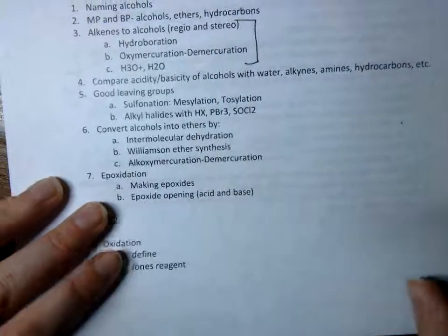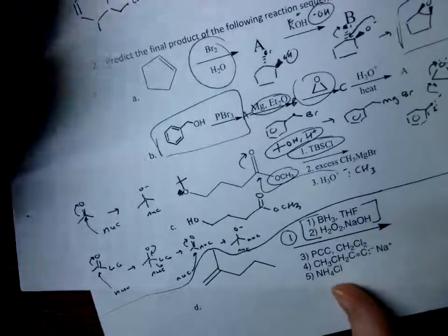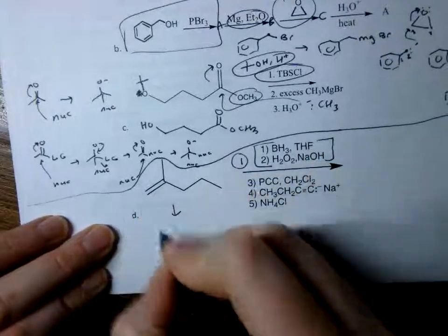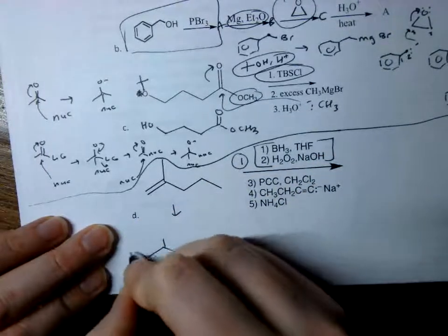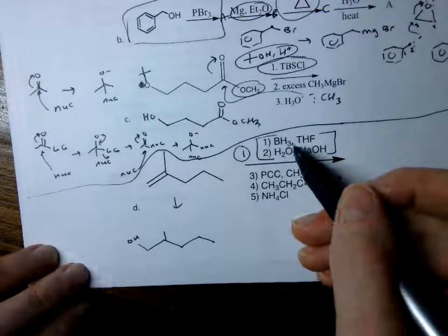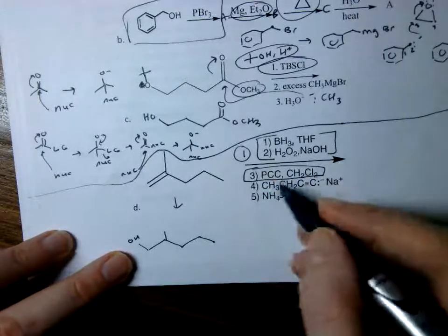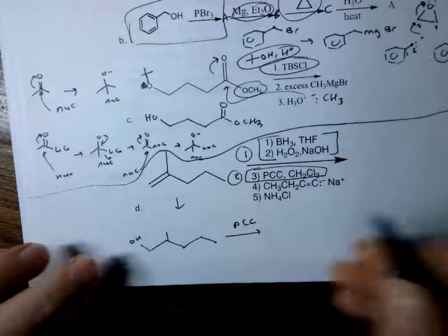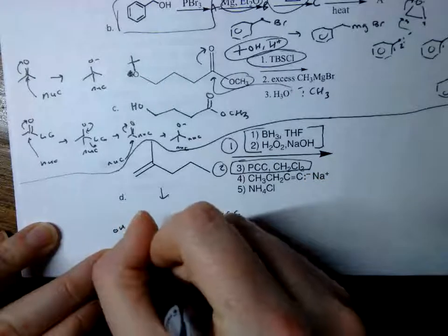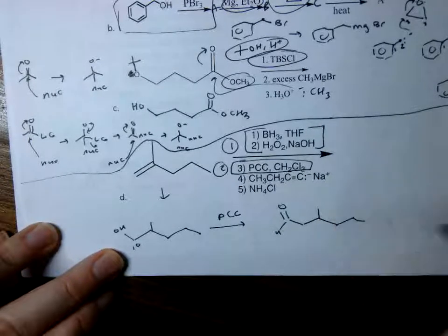The next step is PCC — that's not usually a two-step reaction, it's just one. Hopefully you remember from going over the different oxidizing agents that PCC is the one that takes a primary alcohol to an aldehyde. So it will not go to a carboxylic acid — it stops at the aldehyde.